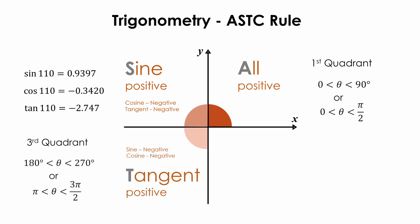The third quadrant is represented by the letter T in ASTC, and in this quadrant, only the tangents of the angles are positive. For example, sine 237 degrees equals minus 0.839, cosine 237 degrees equals minus 0.545, and tangent 237 degrees equals 1.54.